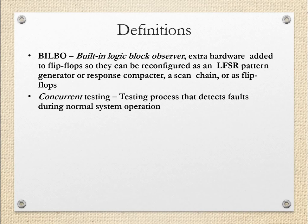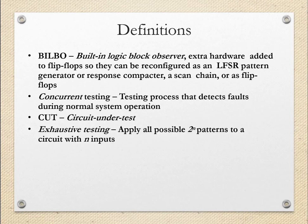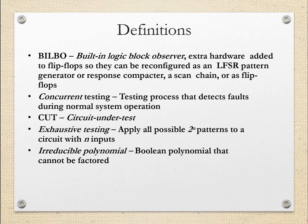The next important definition is concurrent testing: the testing process that detects faults during normal system operation, so testing is performed in parallel. Next is CUT — circuit under test. Then exhaustive testing: apply all possible 2^n patterns to a circuit with n inputs. For example, if there are 10 inputs, we apply 2^10, that is 1024, patterns for exhaustive testing.